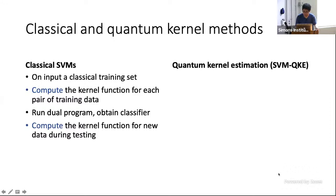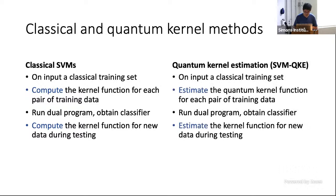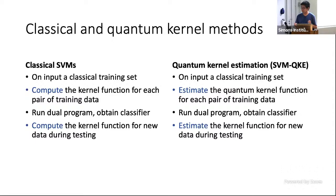Let's look at the difference between classical SVMs and quantum kernel estimation. For classical SVMs, we have a classical training set, compute the kernel function for each pair of training data, run the convex optimization, obtain a classifier, and when testing, compute the kernel function again. For quantum kernel estimation, it is exactly the same, except that we replace 'compute' with 'estimate.' The only step in the entire learning procedure that requires a quantum computer is the quantum kernel estimation routine, while all other optimizations are performed classically.